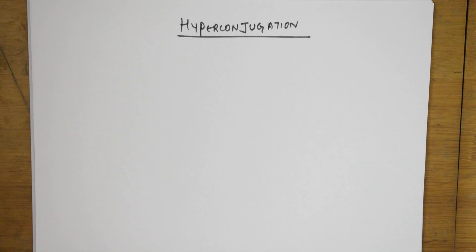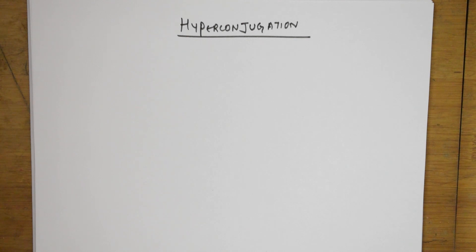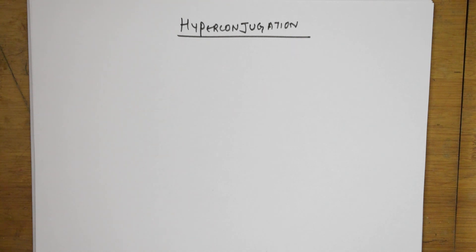Welcome back students to one more session of general organic chemistry. Today we'll be learning about hyperconjugation — a very important concept. We'll see different examples and learn about the effects of hyperconjugation: how it affects bond length, dipole moment, stability of carbocations, carbonium ions, and free radicals.